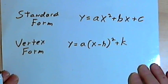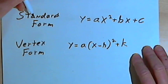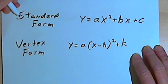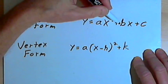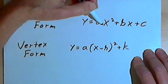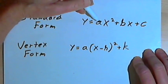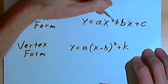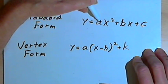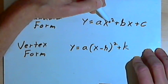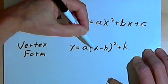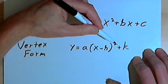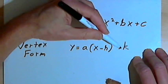Let's start out and talk about the two different forms that you might see a quadratic equation in. There's the standard form, written as y equals ax squared plus bx plus c, where a, b, and c are constants and x is the variable. The vertex form is y equals a times x minus h squared plus k.